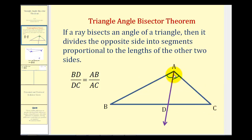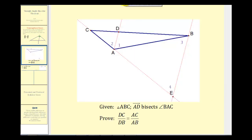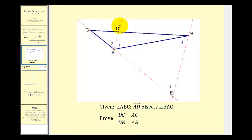Before we prove this, let's talk about a strategy. The key to making this proof work is by constructing a parallel line, as we see here in line BE, that is parallel to the angle bisector AD. If we do this, we can gather some important information in order to prove the Triangle Angle Bisector Theorem.